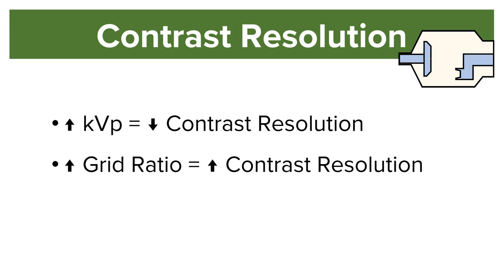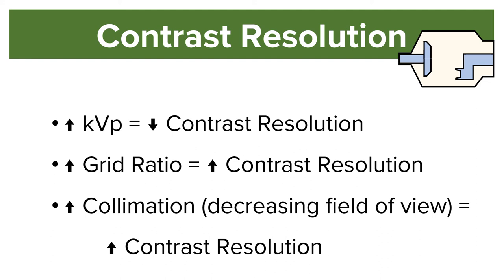Increasing a grid ratio increases contrast resolution because of the decrease in scatter reaching the image receptor. Increasing collimation, or decreasing the field of view, increases contrast resolution because of the decrease in scatter produced.